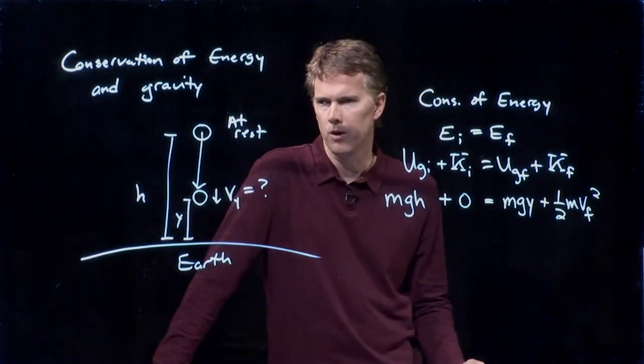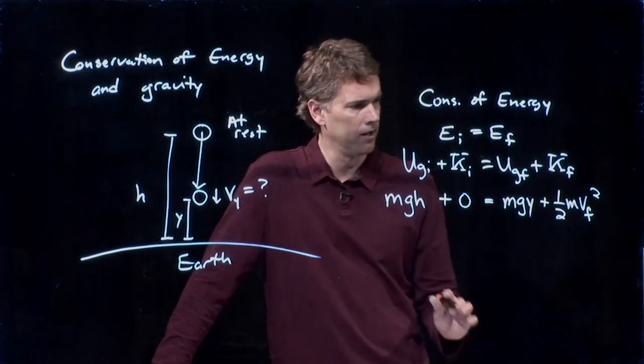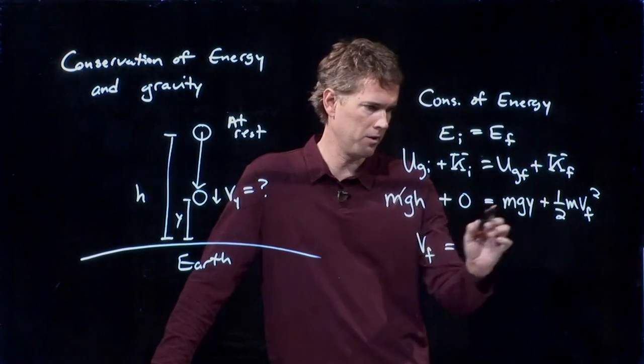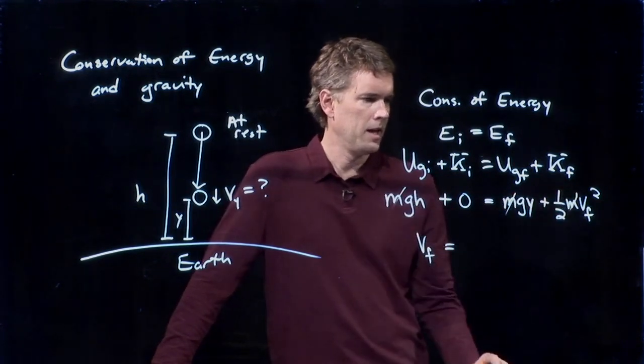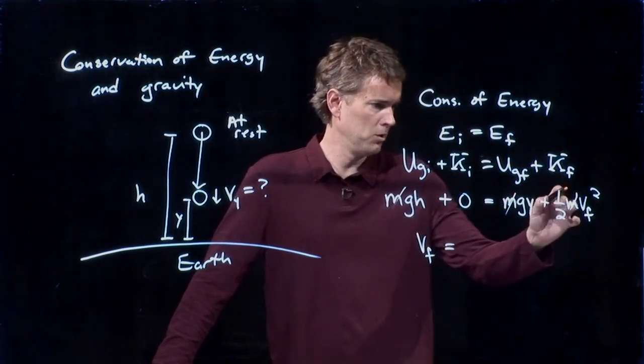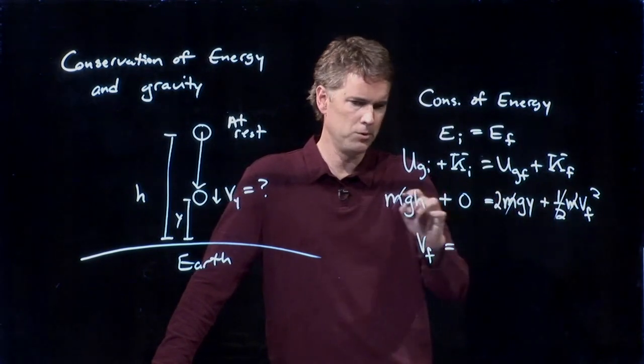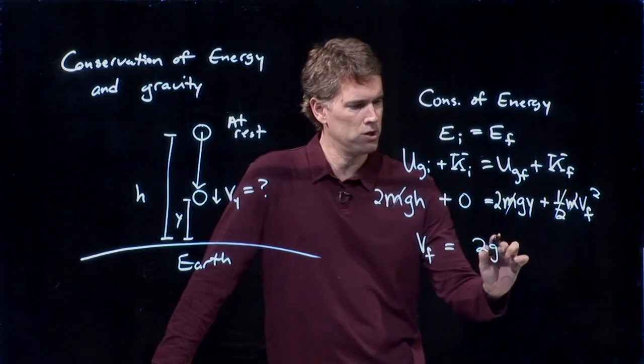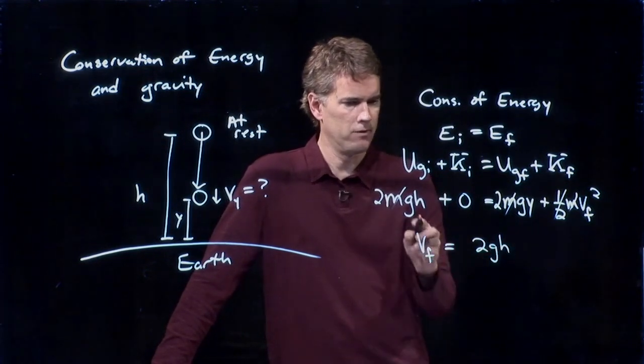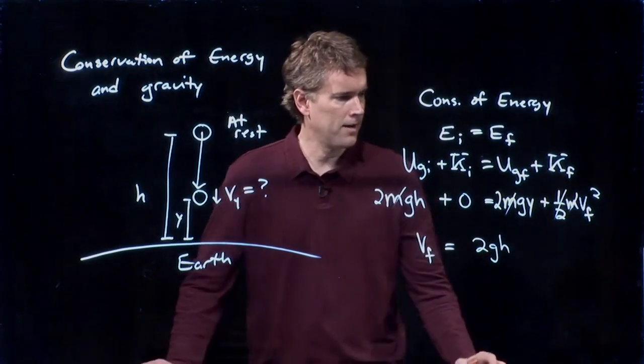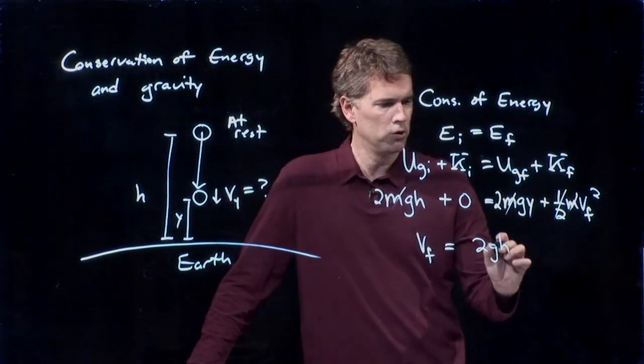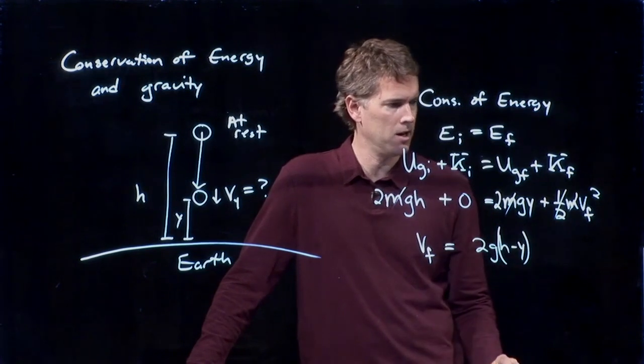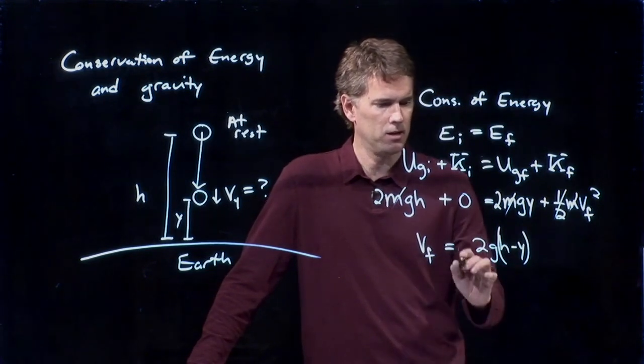And now we can solve this for v_f. V_f is equal to what? We can cross out all the m's. If I multiply everything by 2, I cross out the half. I put a 2 there. I put a 2 there. And we get 2gh from this guy. I have to subtract 2gy. So I can slip that in right there. And that is it.